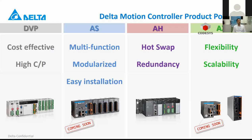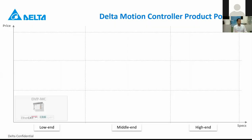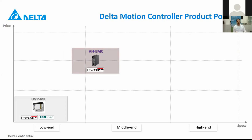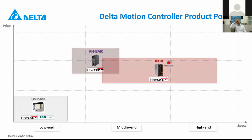Let's have a look at data motion control solutions. The DVP, AS, and AH are PLC families, and those families also have a motion controller in their family. We have DVP motion solution, AS, AH, and now a COTSYS-based motion solution called AX. AH has hot-swappable and redundancy; AS has multi-function modularized easy installation; DVP has high performance and cost effectiveness; and AX has flexibility and scalability. On the chart, DVP-MC covers low-end applications, AH-EMC covers low-end to mid-end, and AX-8 is an EtherCAT-based COTSYS motion controller covering mid-end to high-end applications.